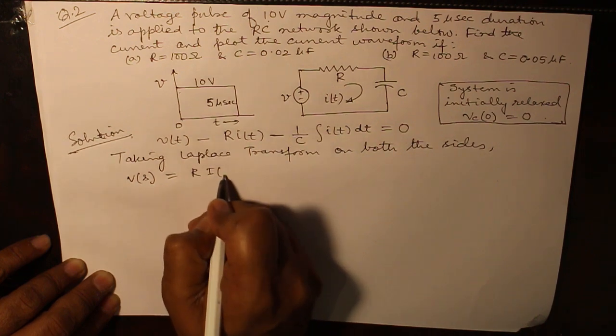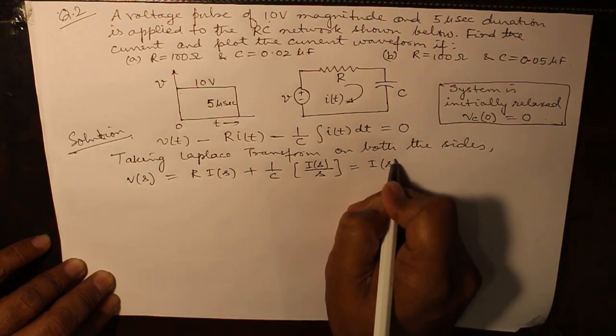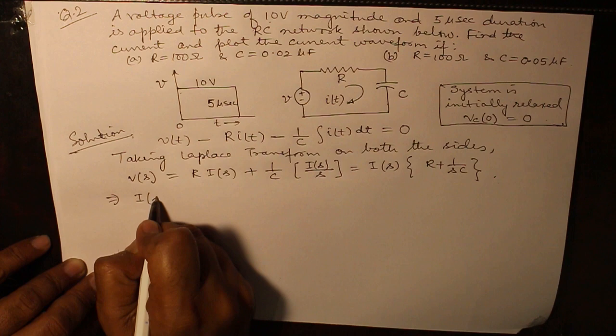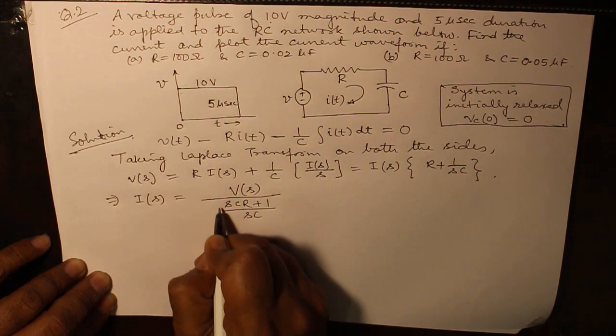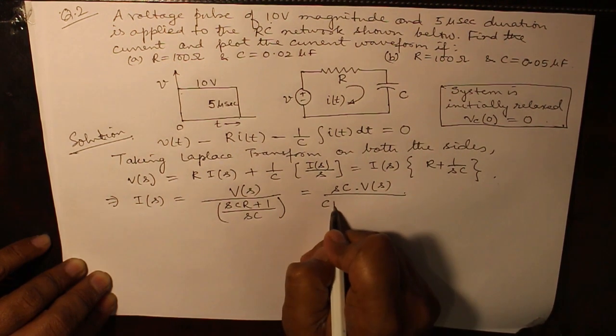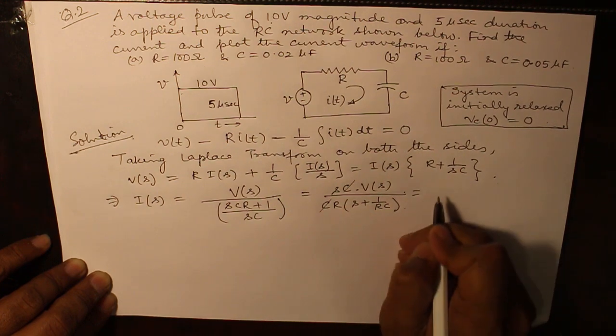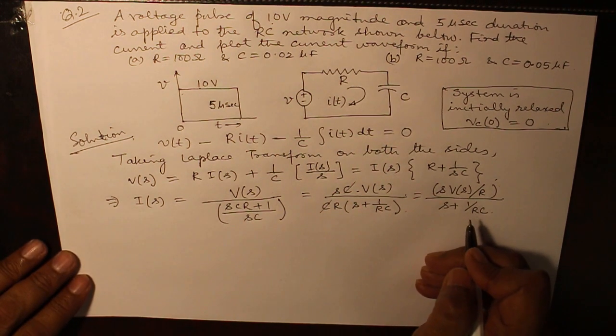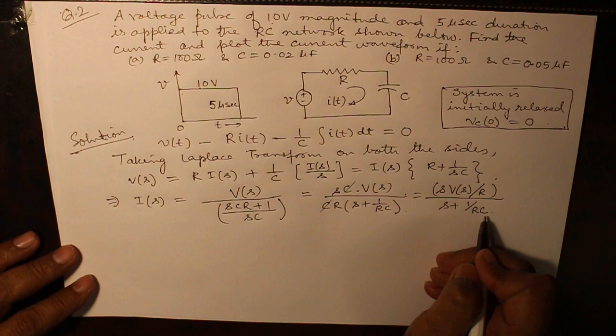V(s) equals R*I(s) plus 1 over C, I(s) over s. Take out I(s) common. We are left with R plus 1 over sc. Thereafter, we can write down I(s) as simply equal to V(s) divided by s(CR plus 1) over sc. Sc goes in the numerator. From here, CR comes out. C gets cancelled, R goes in the numerator. This is the value of current: s*V(s) over R divided by s plus 1 over RC.